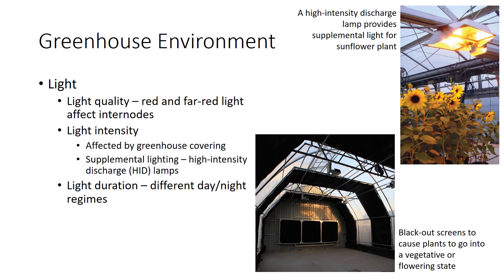When deciding what form of supplemental lighting to use, the light quality, intensity, and duration required by the crops that will be grown must be considered. Maximum light intensity in greenhouses can be achieved in several ways. First, use greenhouse coverings that allow maximum light transmission. Supplemental lighting in greenhouses is commonly used to maximize growth. The most common form of supplemental lighting is high-intensity discharge lamps, because they provide maximum light intensity and light quality.